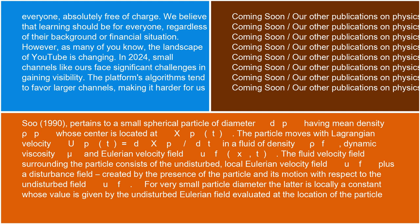The particle moves with Lagrangian velocity u_p(t) = dx_p/dt in a fluid of density ρ_f, dynamic viscosity μ, and Eulerian velocity field u_f(x,t). The fluid velocity field surrounding the particle consists of the undisturbed local Eulerian velocity field u_f, plus a disturbance field.